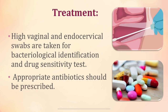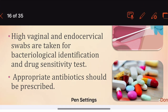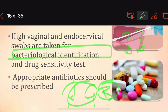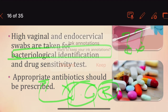Treatment for acute cervicitis begins with prescribing antibiotics. A high vaginal and endocervical swab should be taken for bacteriological identification and drug sensitivity testing. Based on the identified causative organism — whether Neisseria gonorrhoeae or any other bacteria — the appropriate antibiotic is then prescribed.